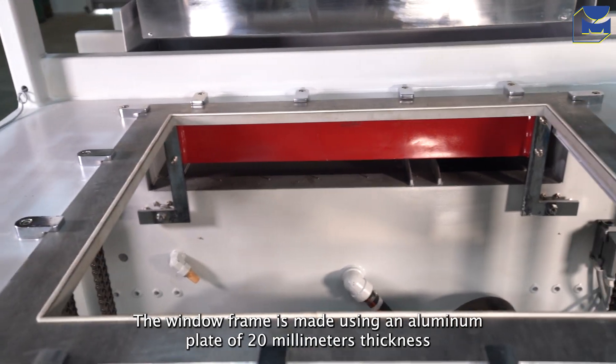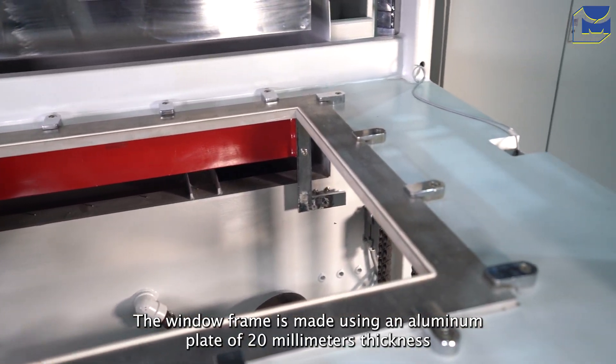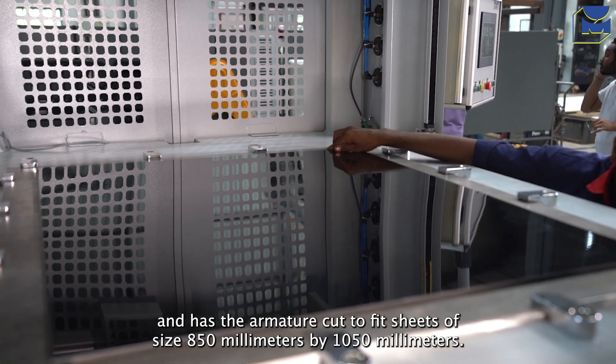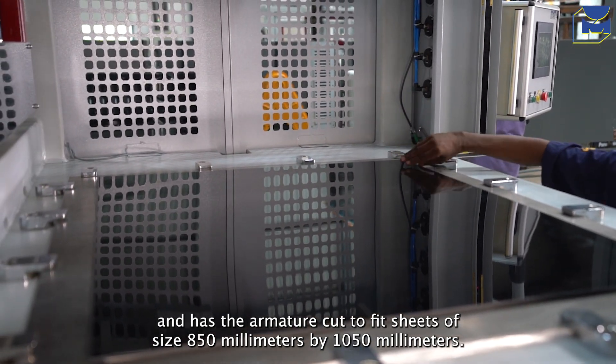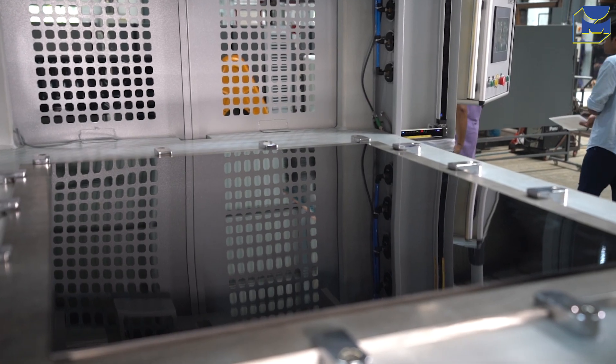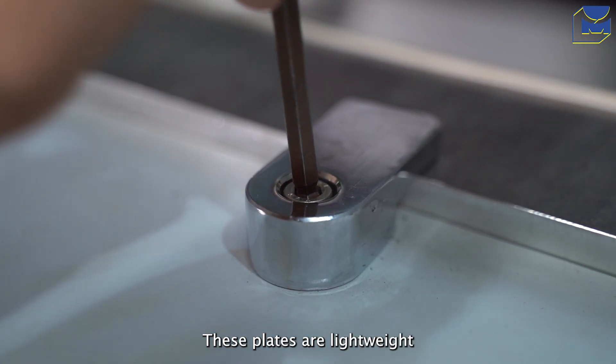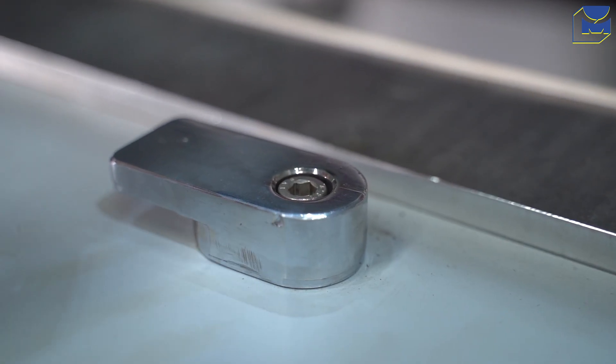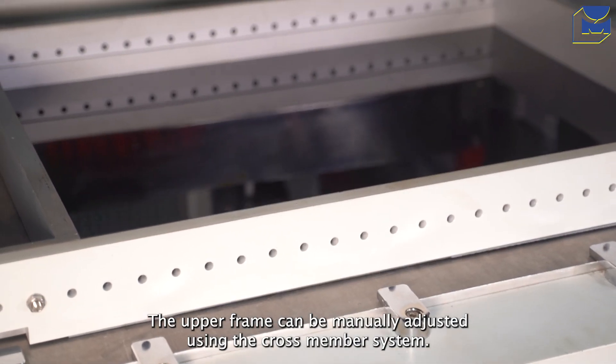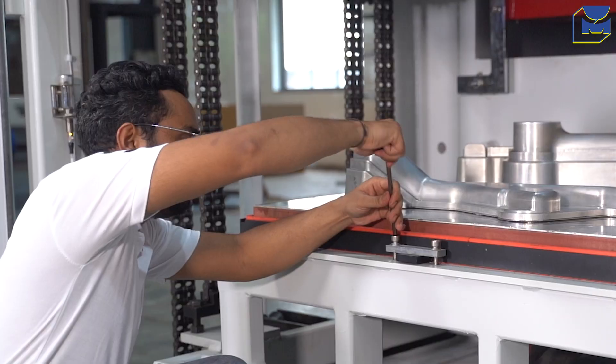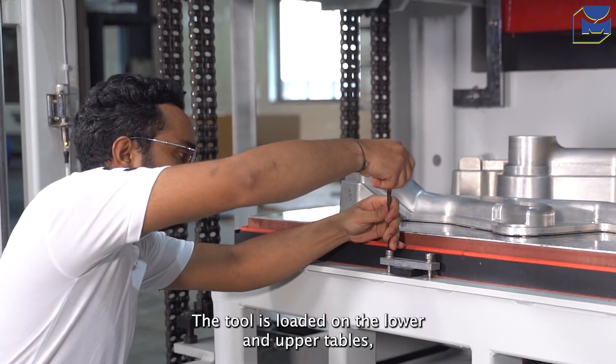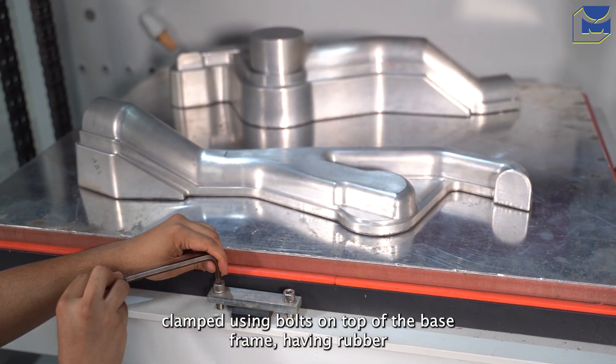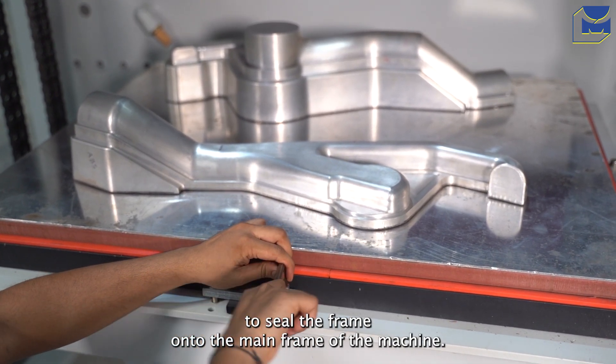The window frame is made using an aluminum plate of 20mm thickness and has the aperture cut to fit sheets of size 850mm by 1050mm. These plates are lightweight and can be changed by the operator easily for a different sheet size. The upper frame can be manually adjusted using the cross member system. The tool is loaded on the lower and upper tables, clamped using bolts on top of the base frame, having rubber to seal the frame onto the main frame of the machine.